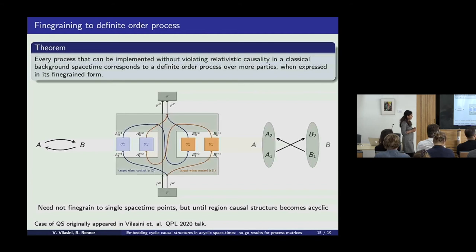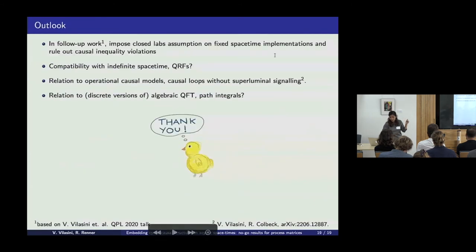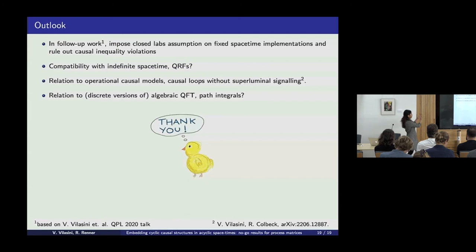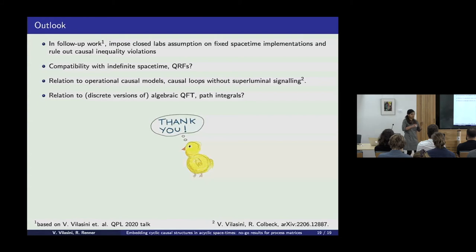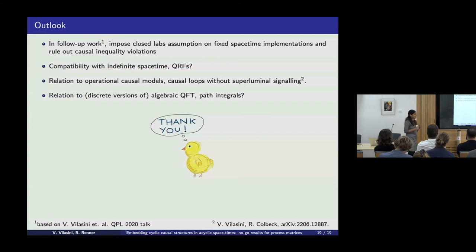Can you rule out any processes with your theorems, like the Lugano process or something like that? Yes, not at the level of this theorem, but at the level of the follow-up work mentioned. The current theorem allows for very general ways of fine-graining. One could argue that if you could just exchange inputs, you could trivially violate a causal inequality, for instance given by the guess-your-neighbor's-input game. So we impose conditions corresponding to the local lab's assumption in our framework, which means we don't have trivial violations, and we show in the follow-up work that we rule out causal inequality violations — so we can't do the Lugano process. In this framework, the Lugano process is possible, but it doesn't satisfy our version of the closed lab assumption.